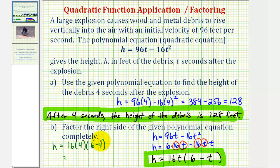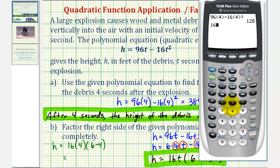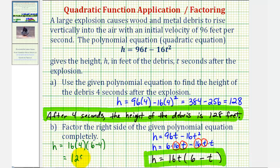Let's go ahead and check this in the calculator. We have 16 times 4 times 6 minus 4, or 2, is equal to 128. I hope you found this helpful.